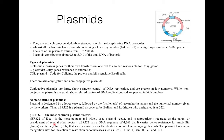pBR322 is the most common and widely used plasmid vector of E. coli, and is appropriately regarded as the parent or grandparent of several other vectors. It has a DNA sequence of 4361 base pairs, and it carries genes for resistance to ampicillin and tetracycline, which serve as markers for the identification of clones carrying the plasmid.